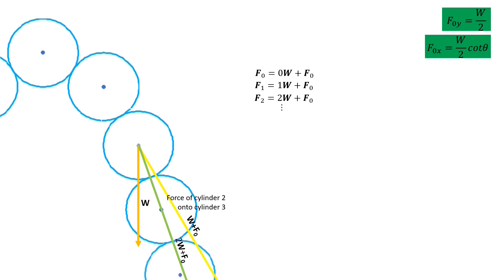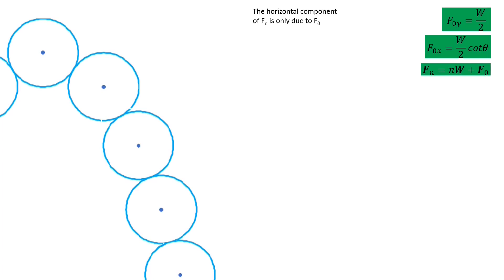And these generalize to the force of the nth cylinder onto the n plus 1th cylinder. And now we put this in a green box and put it aside. Notice that vector nw is only in the vertical direction. So the horizontal component of fn doesn't change as we increase n. So the x component of fn is just the original x component of f0. Then this equates to w over 2 times cotangent theta. The y component of our vector equation is this. And plug in the y component of f0. And now factor.